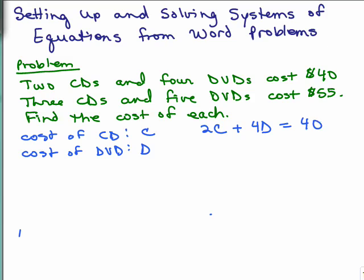What else does it say? Three CDs and five DVDs cost $55. So three CDs, each one costing C, that'll be 3C. Plus add that to the cost of five DVDs, 5D, that would be $55. And there's your system right here.